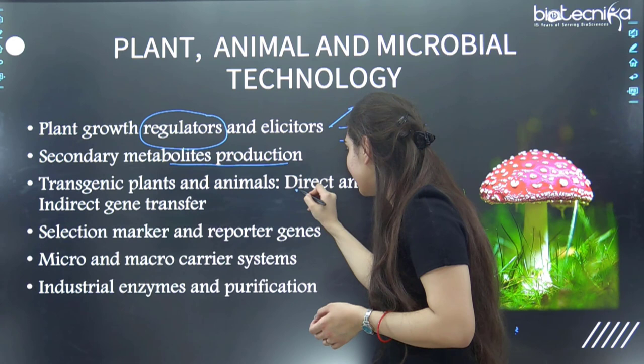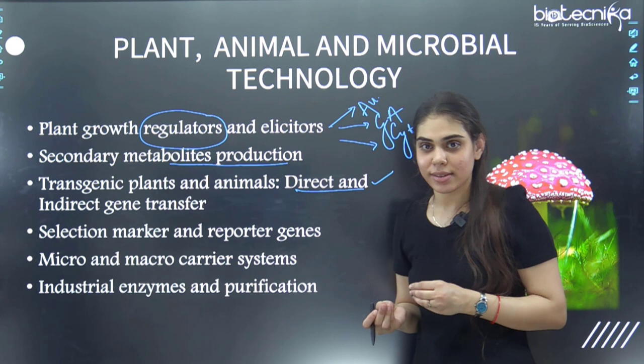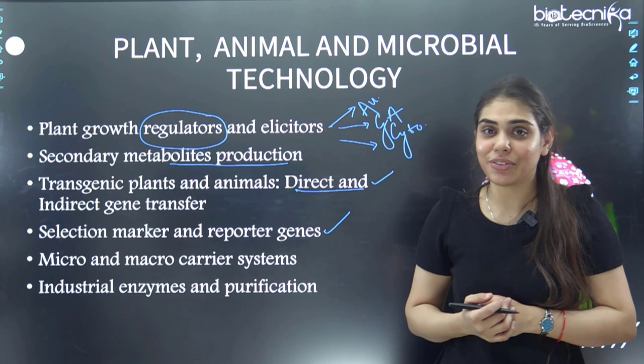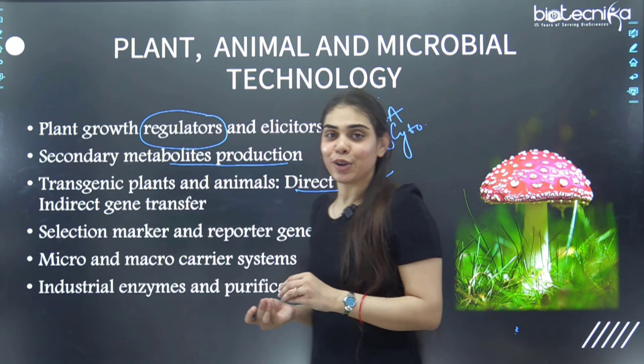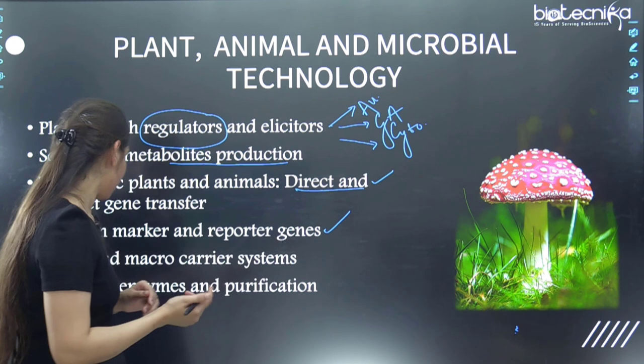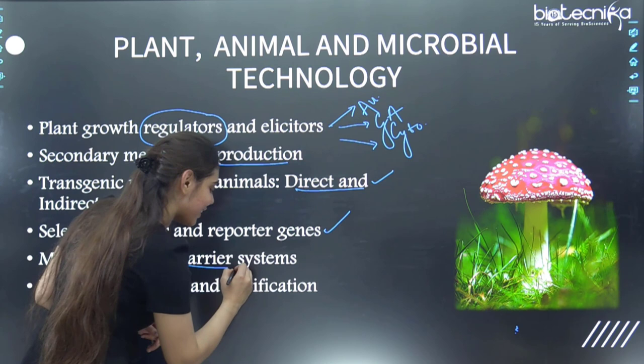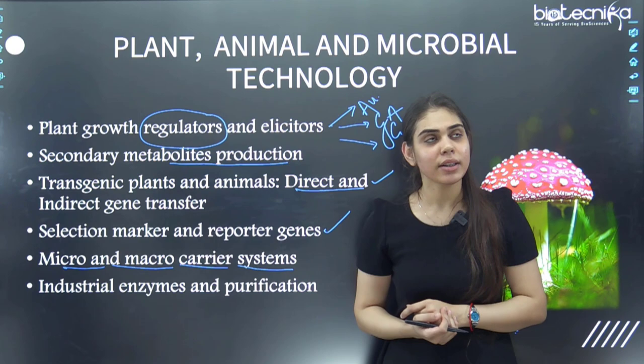Next is selection markers: what are the different types of selection markers, what reporter genes are used in laboratory research, and the basic differences between them. Also, what is the micro and macro carrier system and where it is used in animal biotechnology? For example, they ask about Sephadex column G150 and where it is used.